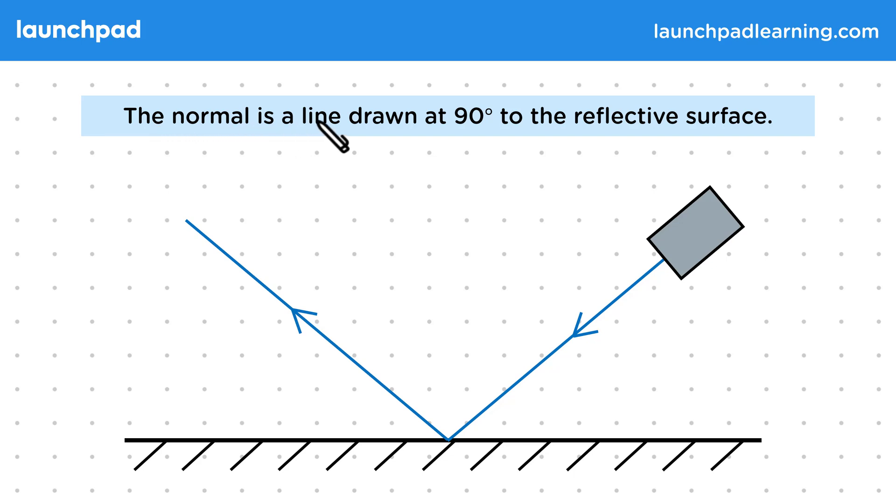The normal is a line drawn at 90 degrees to the reflective surface. So in this case, our normal to the surface would be this. It's a perpendicular line making a right angle to the surface.